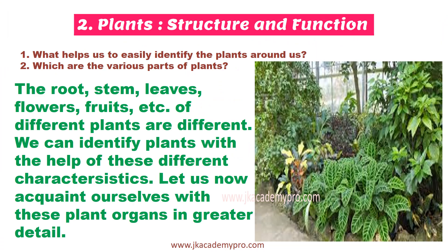Let's reflect on two questions: what helps us to easily identify the plants around us, and which are the various parts of a plant? We know that roots, stem, leaves, flowers, and fruits differ across plants. We can identify a plant by its leaves or fruit — like a mango tree by its fruit, or a banyan tree by its aerial roots and leaves.